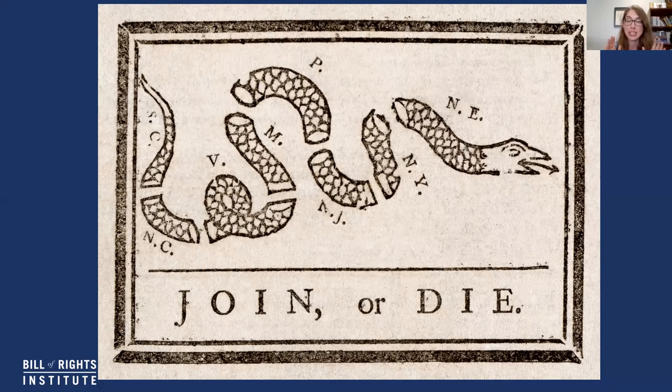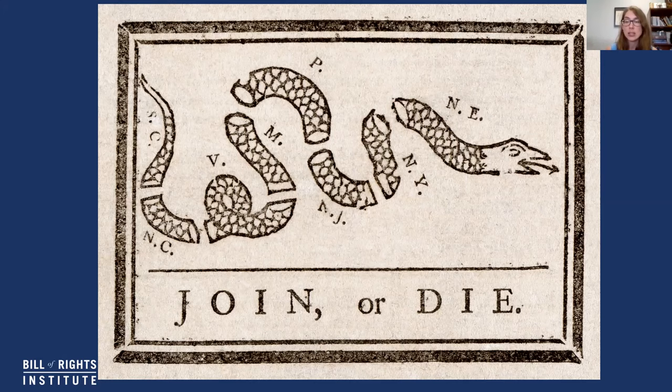So I see a really clear short message here, and I like to think of it as all caps like I'm being shouted at. I can join something, or I can die. So it's a pretty stark choice, and I wonder what I need to join, or why will I die if I don't join. I'm also noticing a snake, and it kind of looks like a rattlesnake, but I'm not really sure what sort of snake it is.